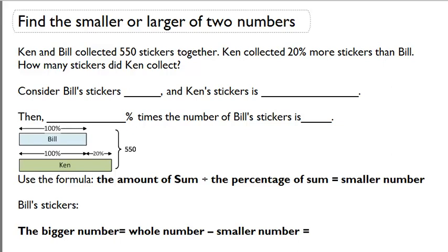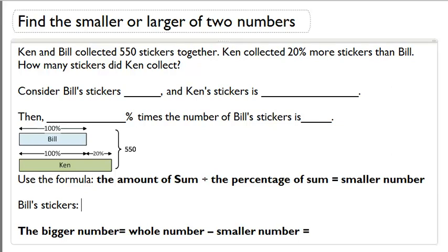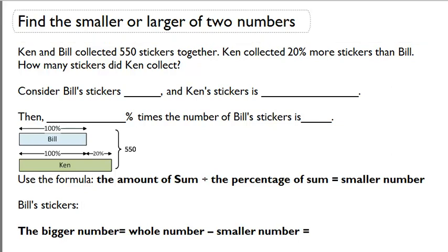Find the smaller or larger of two numbers. Ken and Bill collected 550 stickers together. Ken collected 20% more stickers than Bill. How many stickers did Ken collect?